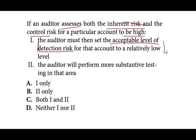Statement one — set detection risk low — is correct. Now all we need to determine is whether statement two is also correct: the auditor will perform more substantive testing in that area. Yes — if you have high control risk and high inherent risk, you have to do more substantive testing and more testing of the accounts. That's how you respond to a high-risk scenario. Therefore the answer is C: both statements one and two are correct.